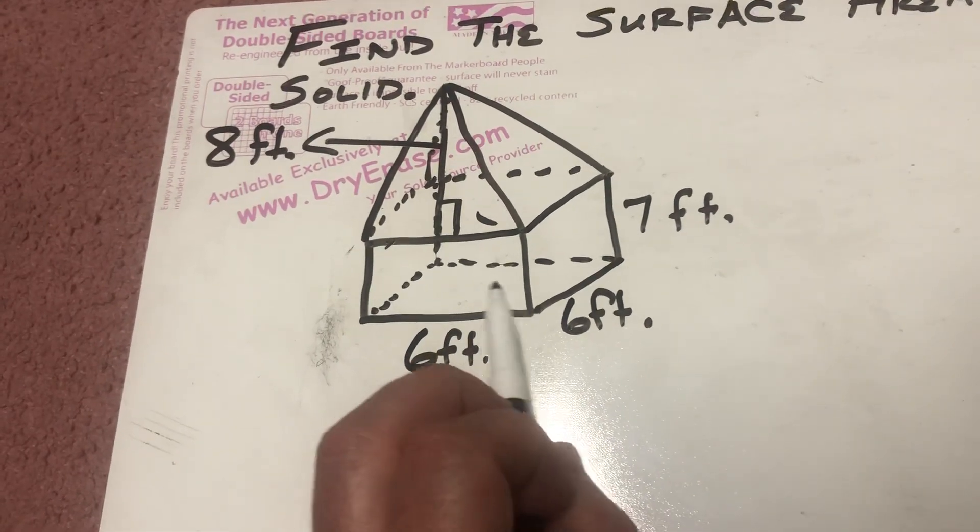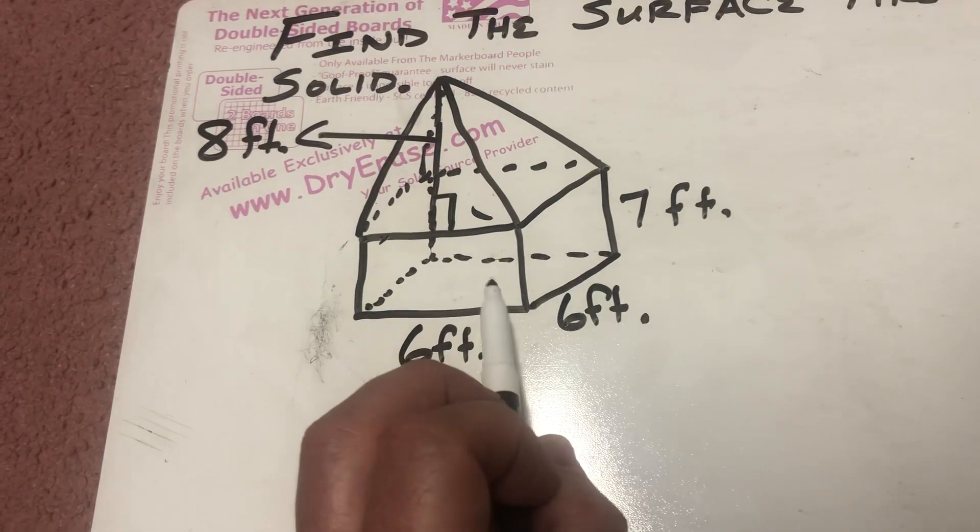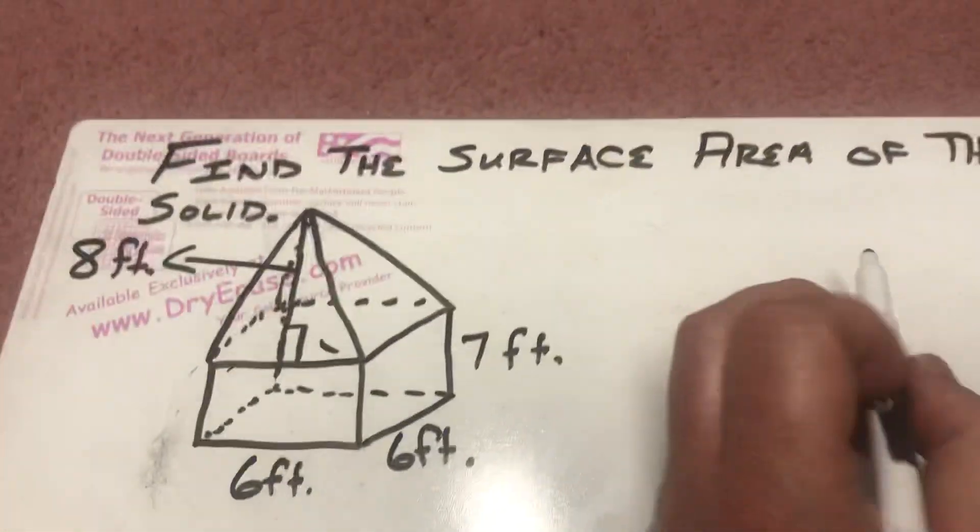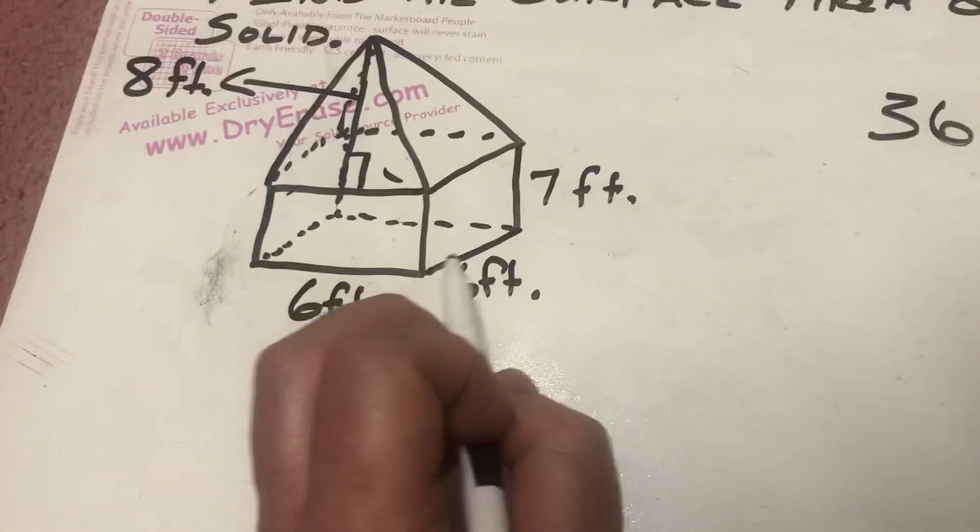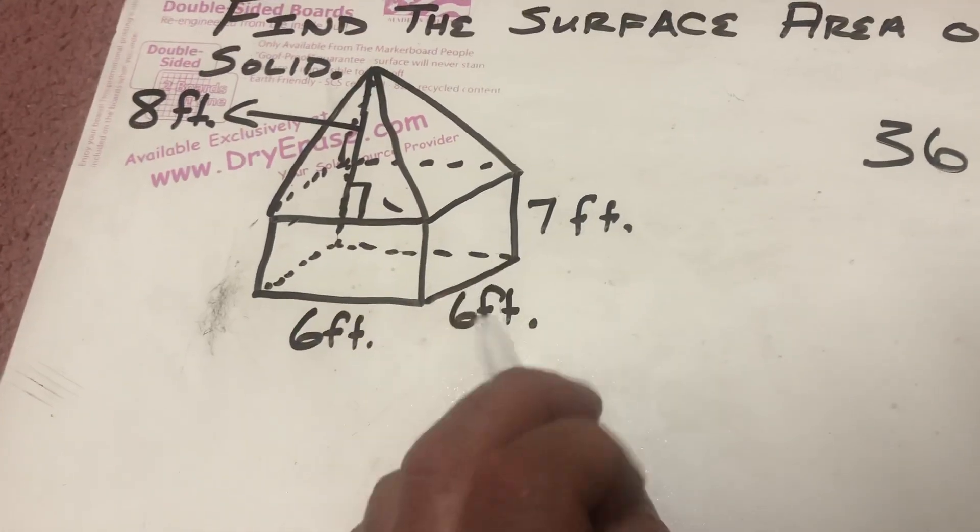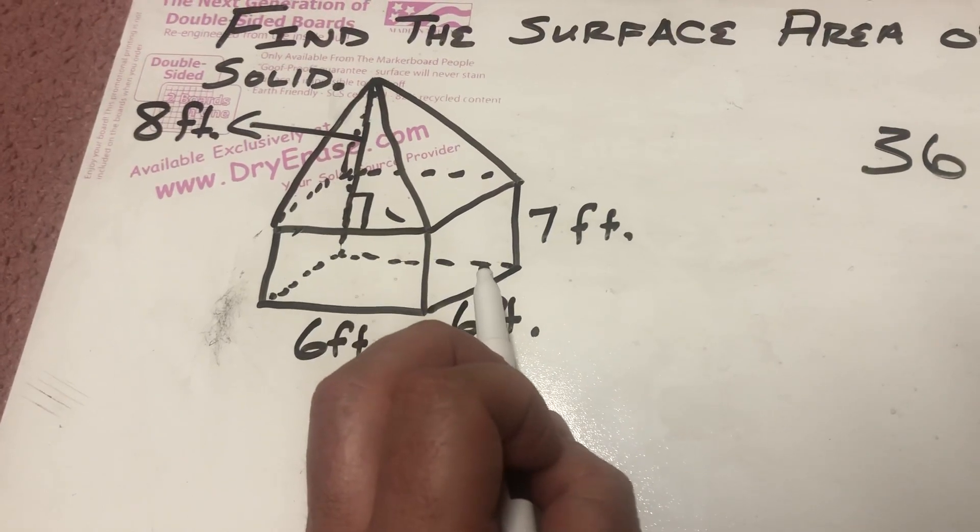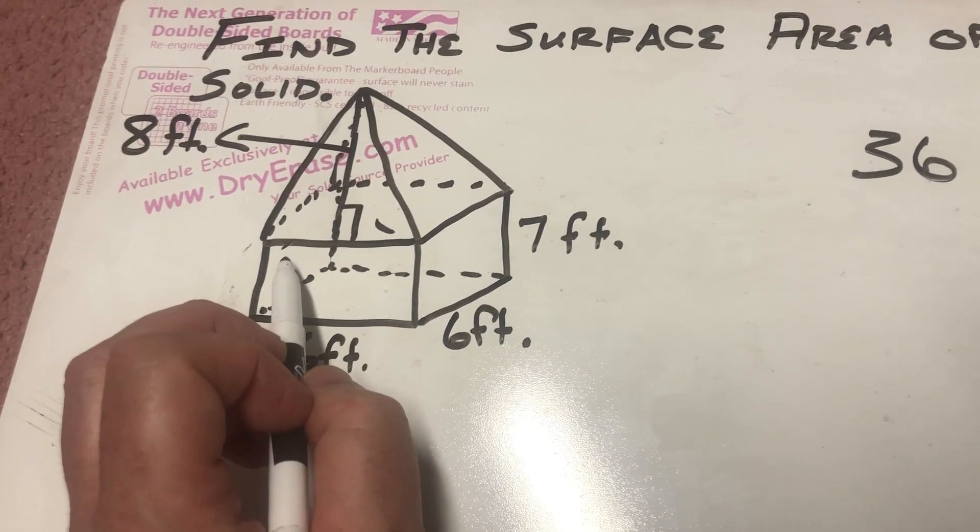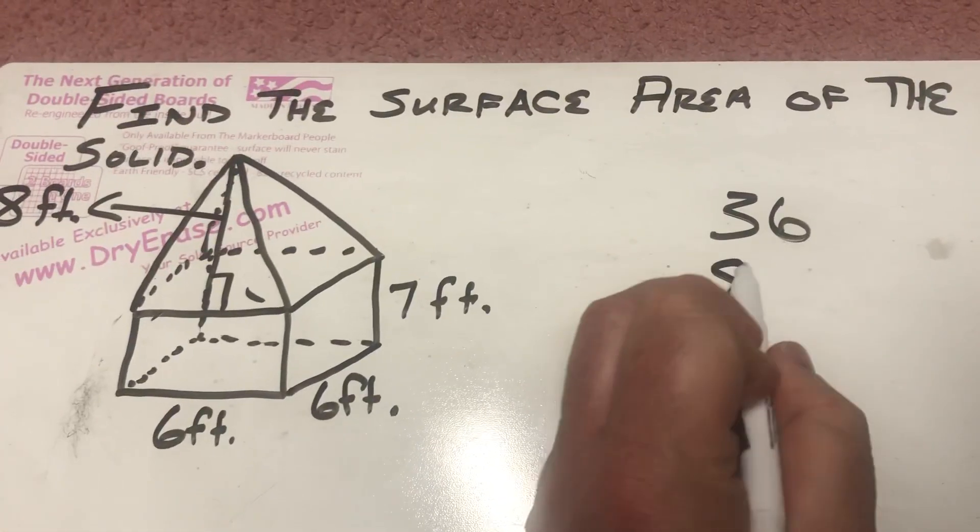So, when I talk about surface area, I'm going to go with the bottom of the rectangular prism here. 6 times 6. That's going to be 36. And then I do this face here, which is going to be 6 times 7. And so, this one is 6 times 7. That's 42. Which means this one is also 42.